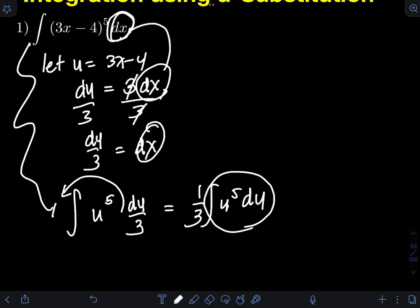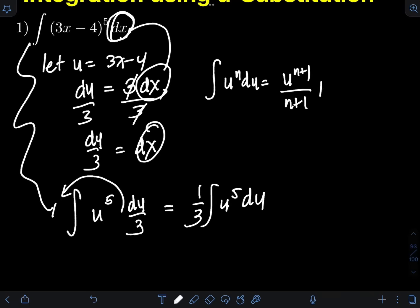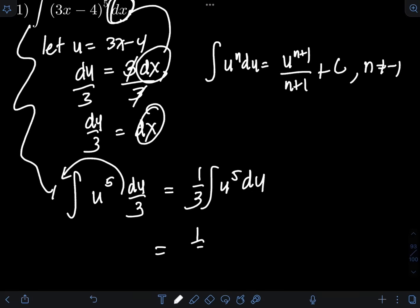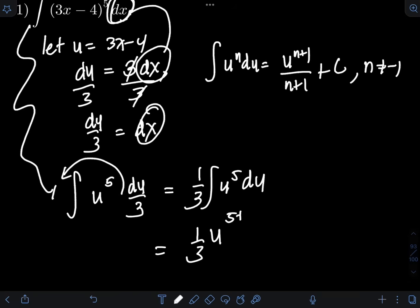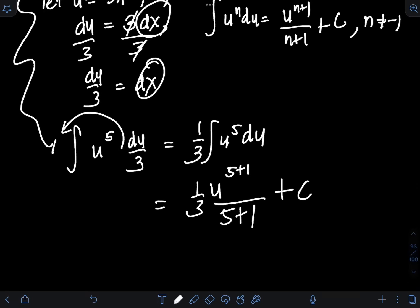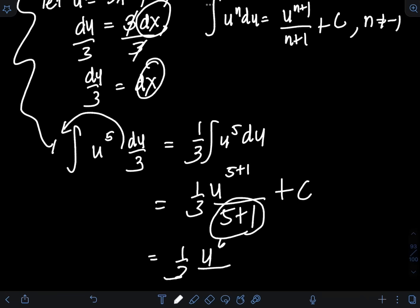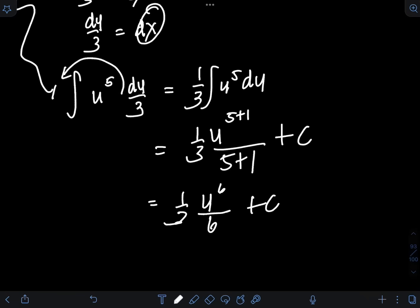The denominator of 3 means a factor of one-third, so we place it in front of the integral: one-third times the integral of u to the 5th du. We can evaluate this using power rule: integral of u^n du equals u^(n+1) over (n+1) plus C, provided n is not equal to negative 1. So we have one-third times u^6 over 6 plus C, which simplifies to 1/18 times u^6 plus C.